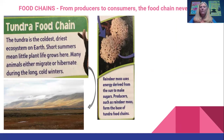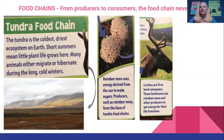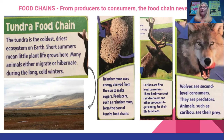Remember, every food chain begins with a producer — a plant-type organism. The caribou are the first consumers. They are herbivores and they eat the reindeer moss and other producers to get their energy. Then the wolves are the second level consumers. They are predators and they eat animals like the caribou, which are their prey.